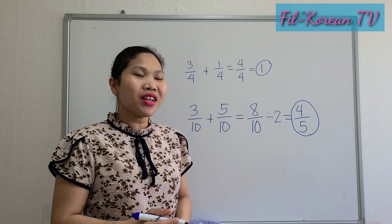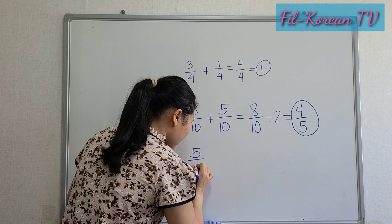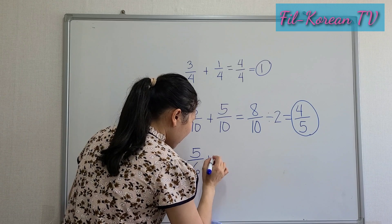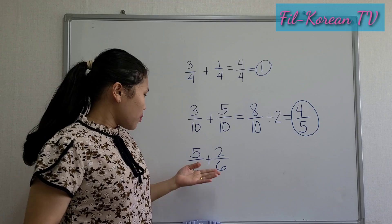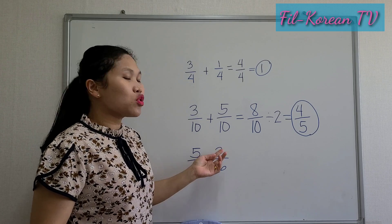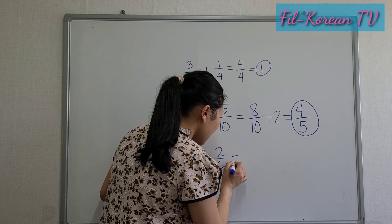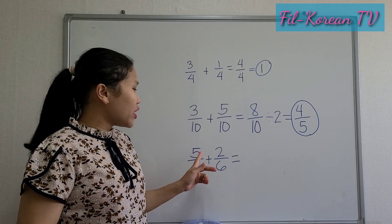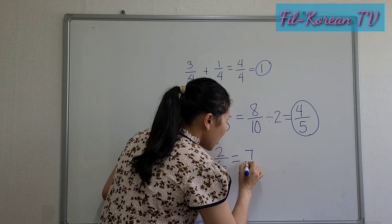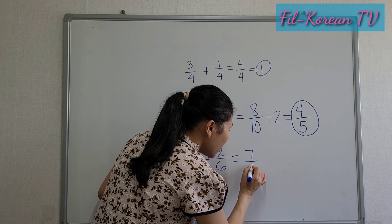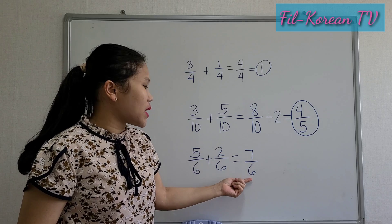Next example. Five-sixths plus two-sixths equals? Add the numerators: five plus two equals seven. Copy the common denominator: six. The answer is seven-sixths.